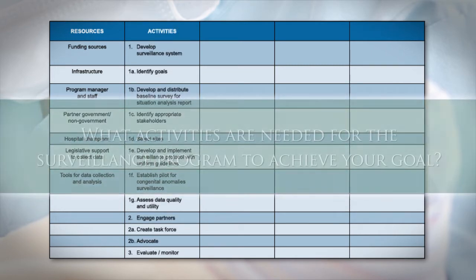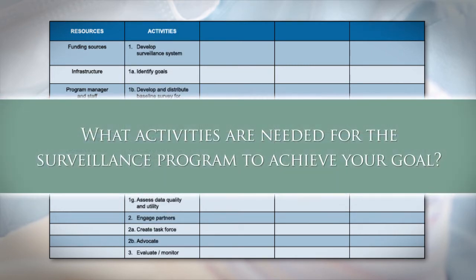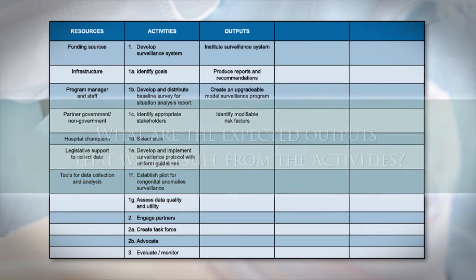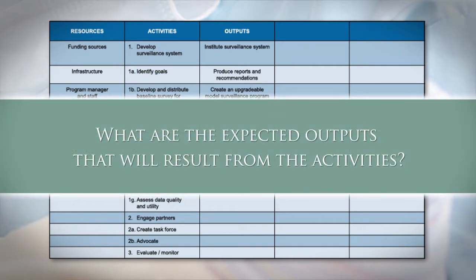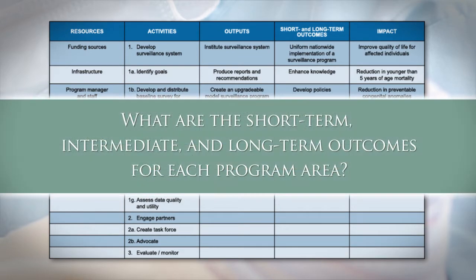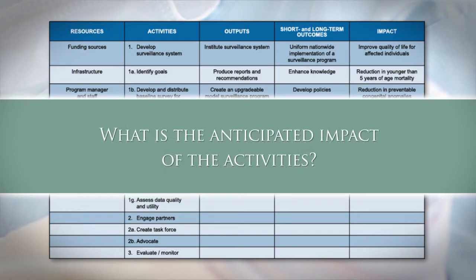Second, activities. What activities are needed for the surveillance program to achieve your goal? Keep in mind that each activity might have different intended audiences. Third, outputs. What are the expected outputs that will result from the activities? And last, outcomes. What are the short-term, intermediate, and long-term outcomes for each program area? What is the anticipated impact of the activities?